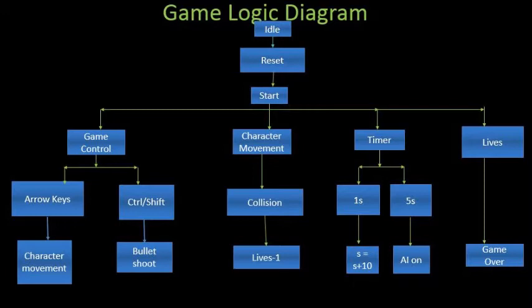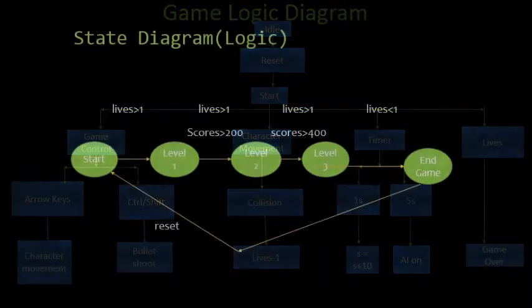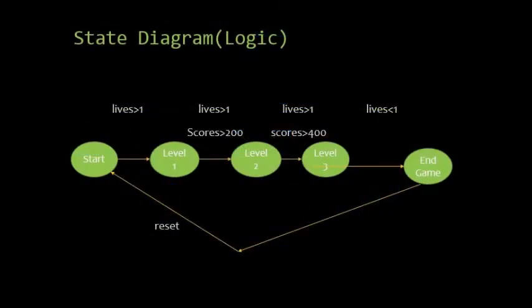We also have various timers. After every one second we increment the score by 10 and after every 5 seconds the AI module turns on. Then we also check the number of lives. So the game gets over when our number of lives turns to 0. Here is the state diagram of the system. It basically explains the transition of levels.